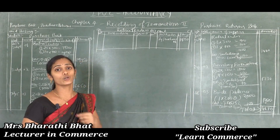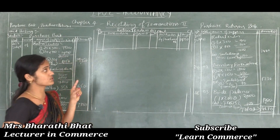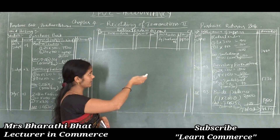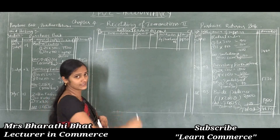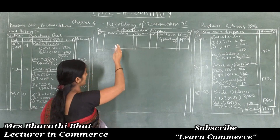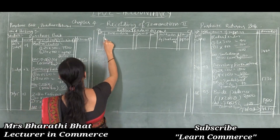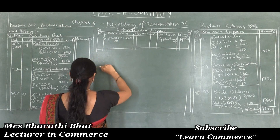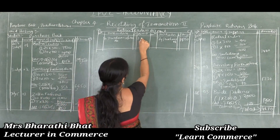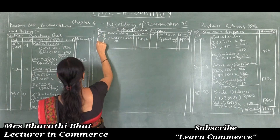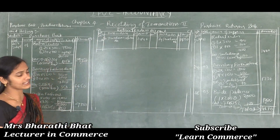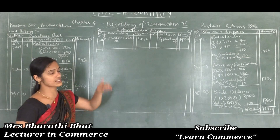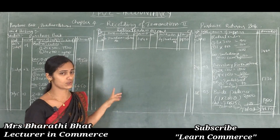There is also a purchase return for Ratna Traders — goods returned to Ratna Traders. When purchase comes on the credit side, purchase return comes on the debit side. So on the debit side, write 'To Purchase Returns account', date 2017 July 10, amount Rs. 1,440. There are no other transactions for Ratna Traders. Purchase always comes on the credit side of the individual account; purchase return comes on the debit side of the individual account.